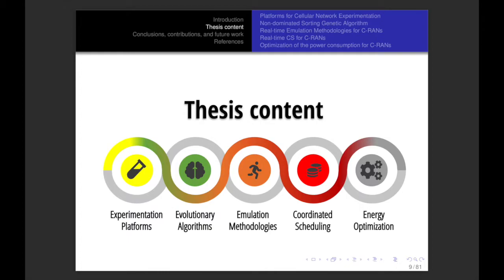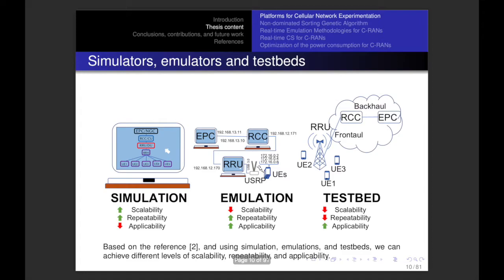Let's start with the thesis content, which is composed of experimentation platforms, evolutionary algorithms, emulation methodologies, coordinated scheduling, and energy optimization. It is important to differentiate between network simulators, network emulators, and testbeds. The first case has good scalability and repeatability but low applicability. For example, in a simulation, it creates an abstraction of every entity of the cellular network and during that process you can forget something important.